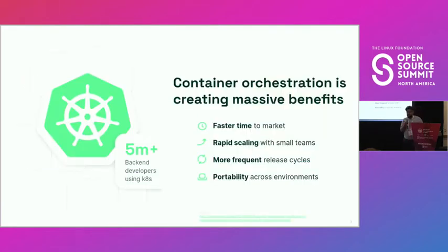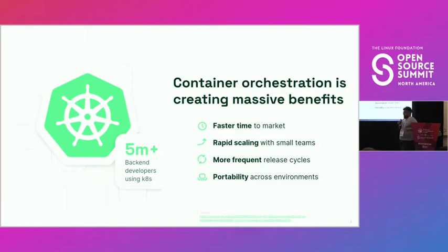Before we get into monitoring costs on Kubernetes, I just wanted to talk a little bit about Kubernetes, if you're not one of the five million back-end developers already using it. Kubernetes is container orchestration, and basically what it lets you do is take your applications to production faster, rapidly scale things out with auto-scaling, release code to production more frequently with containers, and be portable across multiple environments — whether that's on the edge, in data centers, or in one of your favorite flavors of cloud providers.